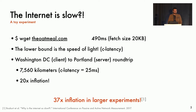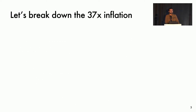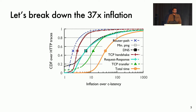In a larger experiment with clients in over 100 countries, we found the median inflation to be 37 times. Let's see where exactly the 37 times inflation is coming from. As you can see in the plot, most steps needed to complete an HTTP transfer, such as DNS, TCP transfer, etc., are each inflated five times or more in the median.